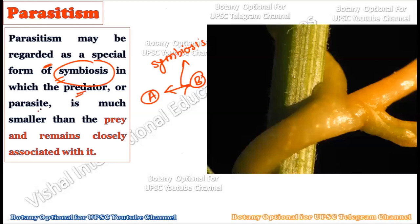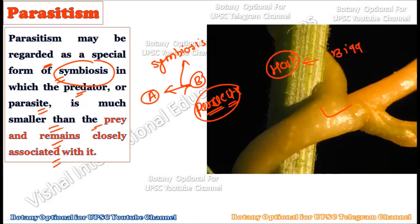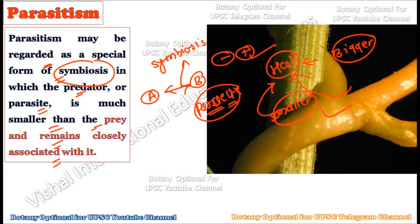In parasitism, the predator or parasite is much smaller than the prey and remains closely associated with it. The parasite is quite smaller in size compared to its host — hosts are generally bigger. This is a negative and positive type of relationship: the parasite gets benefited (positive sign), while the host is negatively affected because whatever nutrients it creates are consumed by the parasite (negative sign).